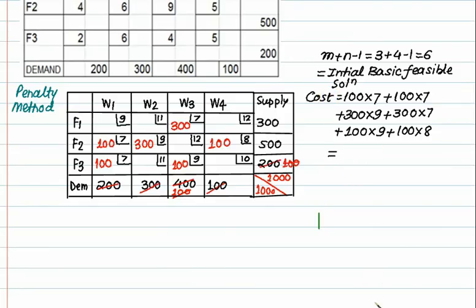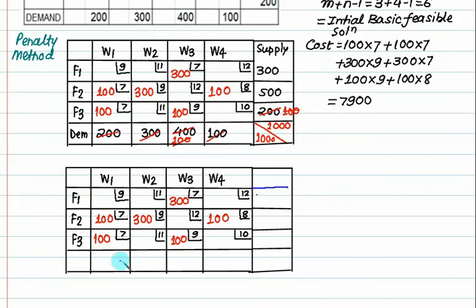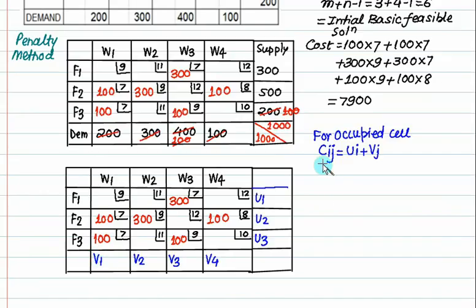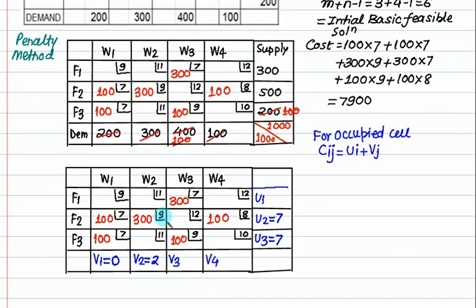We will now check whether this solution is optimal using the MODI (U-V) method. For occupied cells, Cij = Ui + Vj. We start by setting V1 = 0. Since V1 = 0 and the cost is 7, we get U1 + V1 = 7, giving V1 = 7. For U2: the cost at that cell is 7, so 0 + 7 = 7. Then for the next occupied cell with cost 9, using V = 7, we get U = 2, since 2 + 7 = 9. We skip cells where both U and V are unknown.